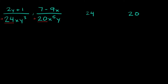Let's break down 24 first. I can break that down into 4 times 6. Neither of these are prime, so we can keep going. 4 breaks down into 2 times 2, and 6 breaks down into 2 times 3. All of these are prime, so I can circle all of those.